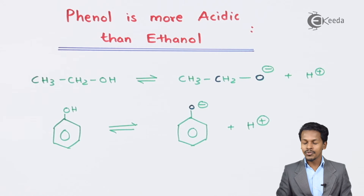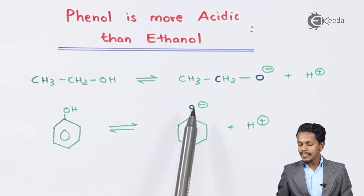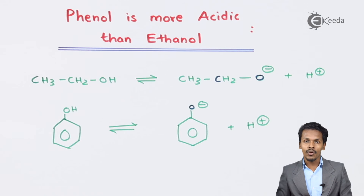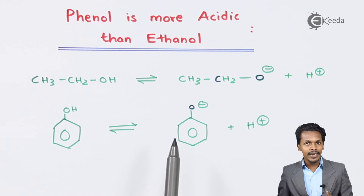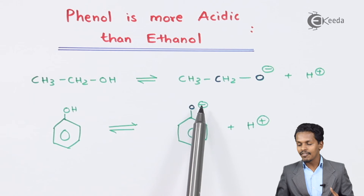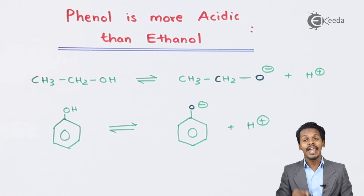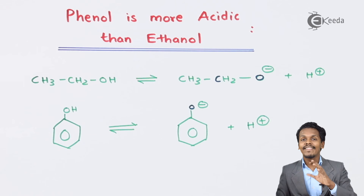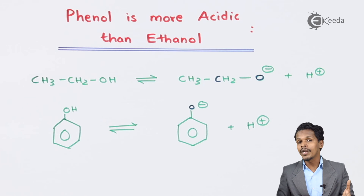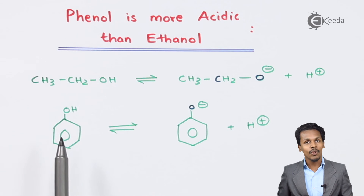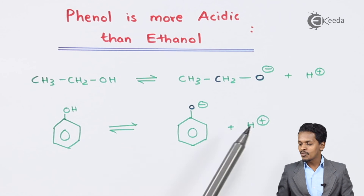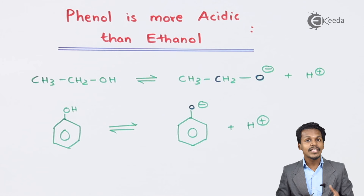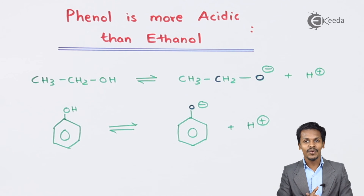Additionally, even after the H+ ion is removed from phenol, the phenoxide ion obtained carries a negative charge on oxygen. This oxygen, with its negative charge and lone pair of electrons, participates in the delocalization of electrons, making the phenoxide ion more stable compared to phenol. That is how H+ ion can be lost easily when phenol ionizes, and this is the reason phenol is more acidic compared to ethanol.